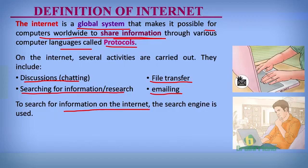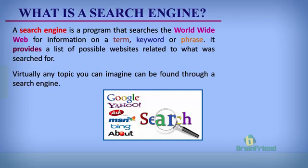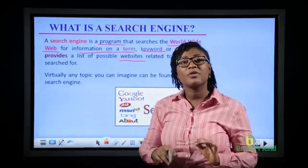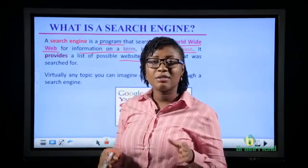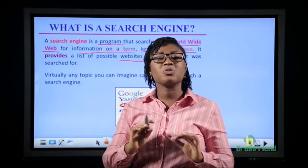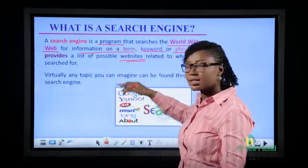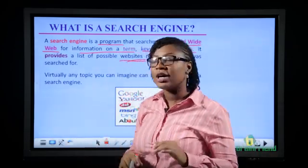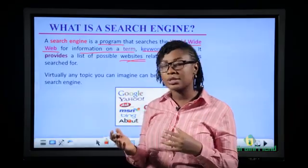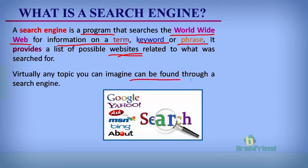To search for information on the internet, we use the search engine. A search engine is a program that searches the World Wide Web for information on a term, a keyword, or a phrase. It provides a list of possible websites related to what was searched for. For example, if you type 'clothes' in the search box, it shows different clothing websites related to what you searched for. Virtually any topic you can imagine can be found through a search engine.